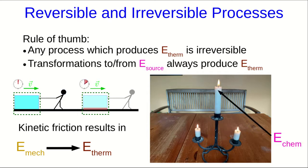We start with chemical energy. We're going to get some light energy, which is another form of source energy, but we've transformed source energy, and so inevitably we get thermal energy, which is hopefully fairly intuitive to you.